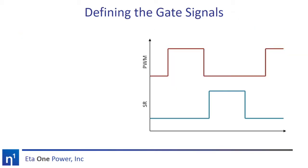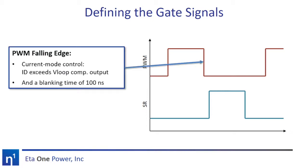The next step is to define the controller. In AdaDesigner, controllers are designed by placing constraints on the edges of the gating waveforms. Here we have waveforms for the primary side transistor as well as the synchronous rectifier transistor. Let's take a look at the constraints on each individual edge. We'll start with the falling edge of the primary side PWM signal. Since we're using current mode control, we'll turn off the primary side switch when the sensed drain current exceeds the error amplifier output, called V-loop.